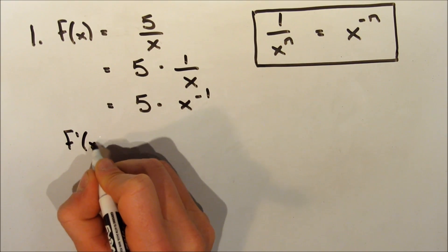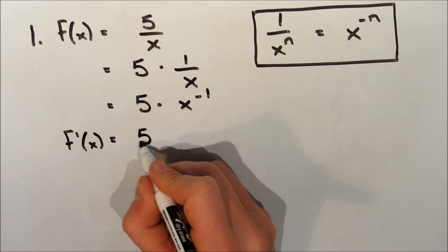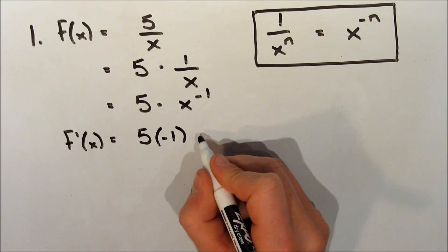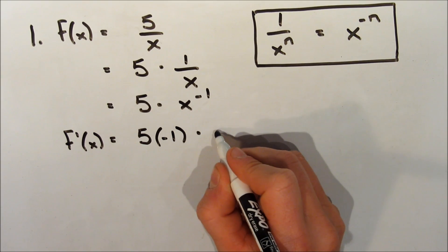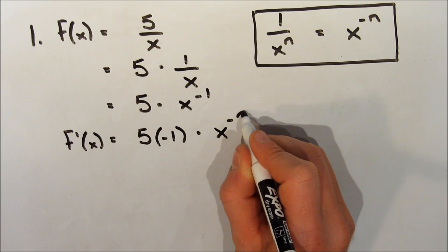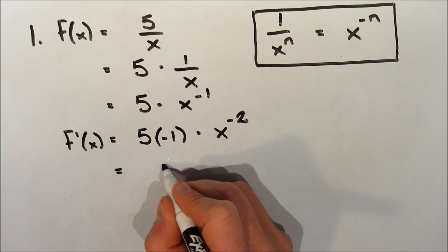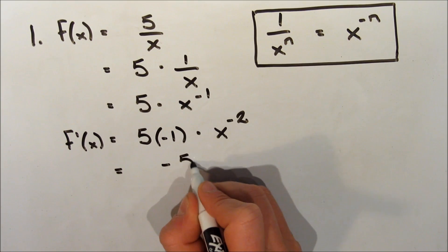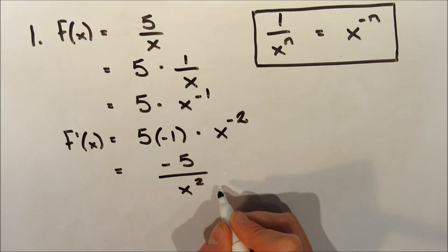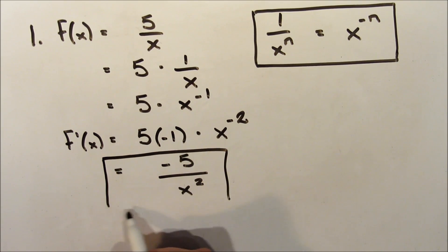Now that we have this, we can write out f prime of x is equal to 5 times negative 1, which is the exponent on x, multiplied by x — and now we're subtracting 1 from the exponent, so negative 2. We're going to simplify this, so it's actually negative 5 over x squared. And that's the derivative of our function.